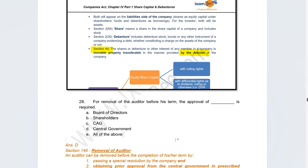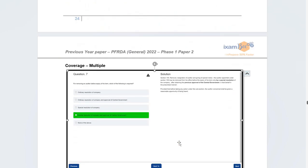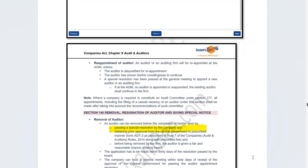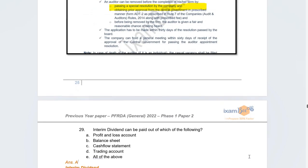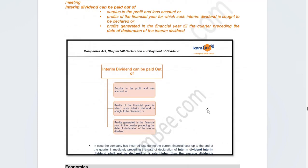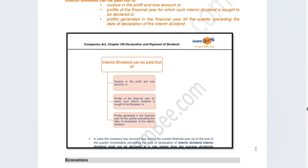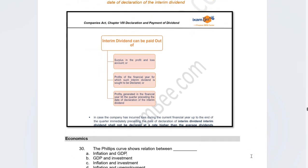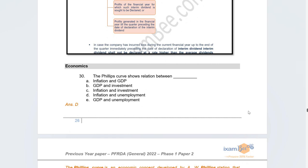If auditors have to be removed, whose approval is required? The correct answer is the Central Government's approval. Finally, the last Companies Act question: interim dividend should be paid out of what? It has to be paid out of the profit and loss account. Both points were specifically covered in the notes and questions.